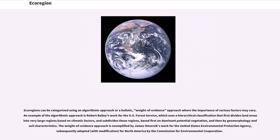Ecoregions can be categorized using an algorithmic approach or a holistic, weight of evidence approach where the importance of various factors may vary. An example of the algorithmic approach is Robert Bailey's work for the U.S. Forest Service, which uses a hierarchical classification that first divides land areas into very large regions based on climatic factors, and subdivides these regions based first on dominant potential vegetation, and then by geomorphology and soil characteristics.